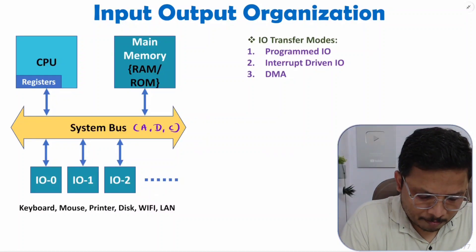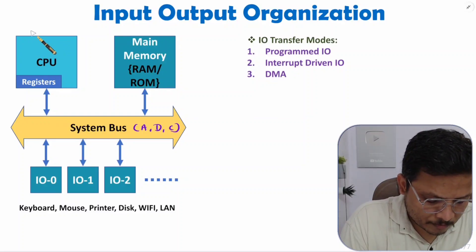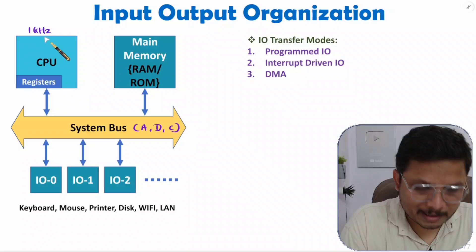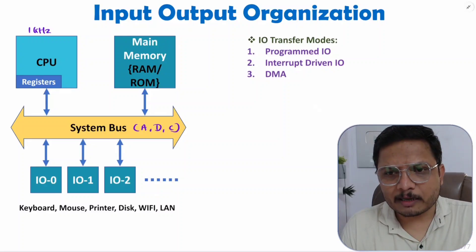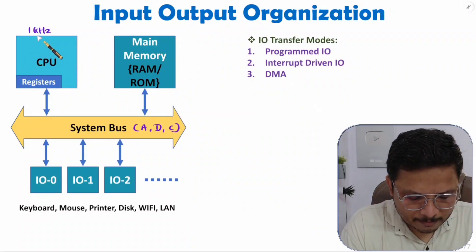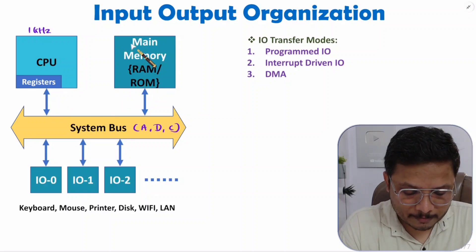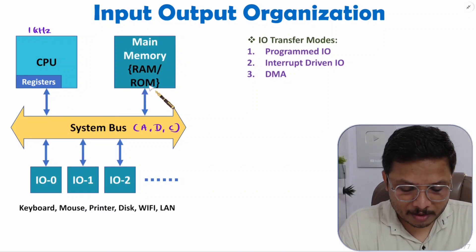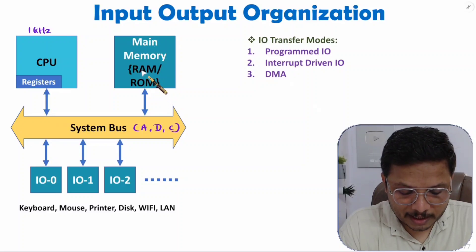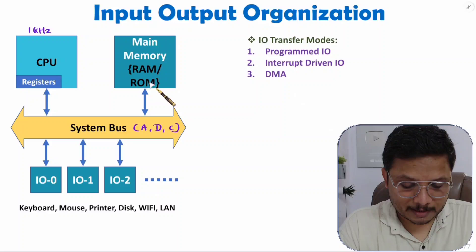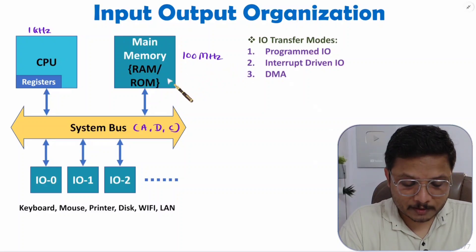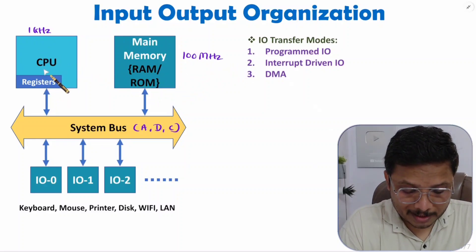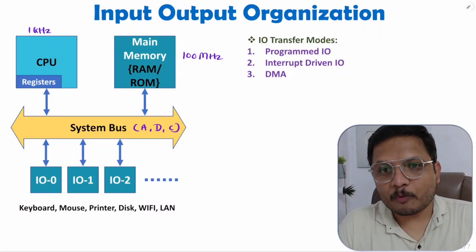Let me give you a practical example. You might have seen CPUs with one gigahertz processor. Nowadays CPUs are available with three or four gigahertz. So generalizing, the speed of CPU is around one gigahertz. When it comes to main memory — which is a combination of RAM and ROM — it functions in terms of hundreds of megahertz. So the speed of CPU is about 10 times compared to the speed of main memory.